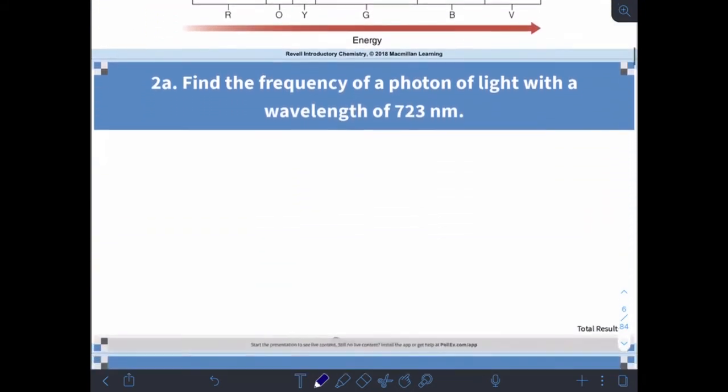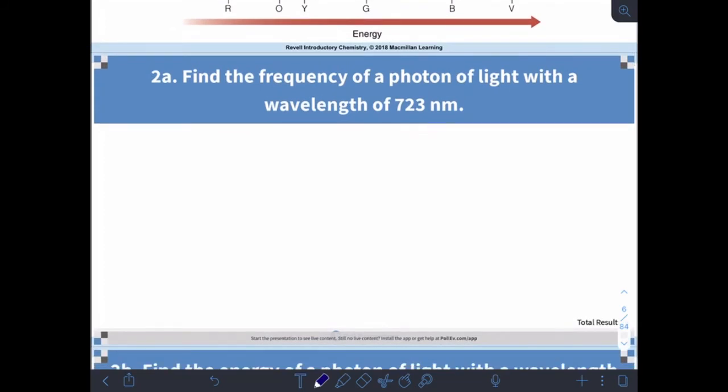Continuing on with some more of this type of work. Find the frequency of a photon of light with a wavelength of 723 nanometers. Does the question ask anything about energy? No, so I can ignore all of these. Because I know c and I know the wavelength, I'm going to look at this equation.